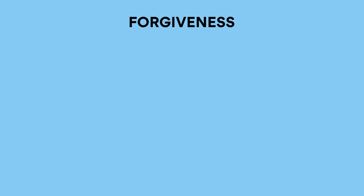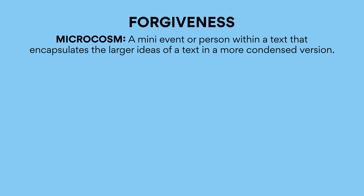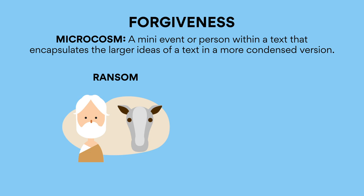Forgiveness. Both texts also convey the immense power of forgiveness, and both Ransom and Invictus employ a variety of microcosms to depict this. A microcosm is a mini event or person within a text that encapsulates the larger ideas of a text in a more condensed version. For example, Ransom has Somax's story about Beauty, in which she murders his son and yet Somax nonetheless hugs Beauty out of grief — Somax and Beauty act as a microcosm for Malouf's larger message about the necessity of forgiveness.